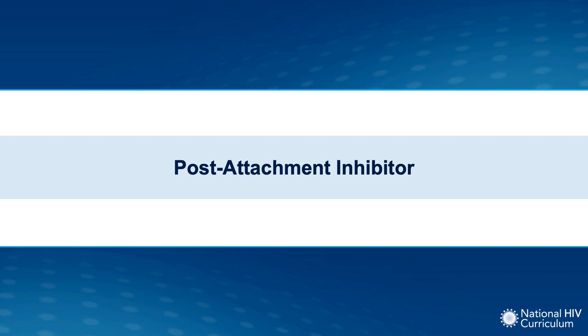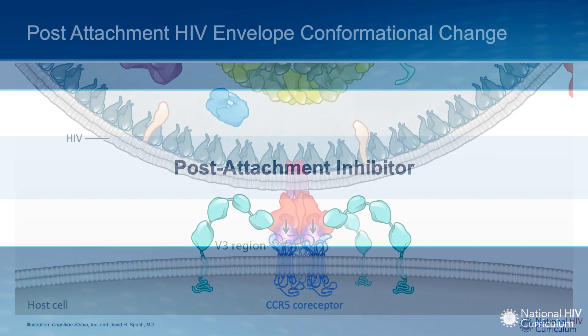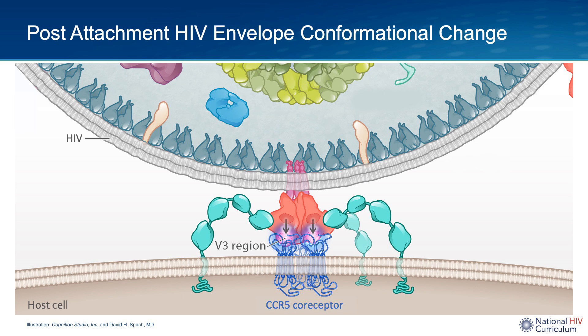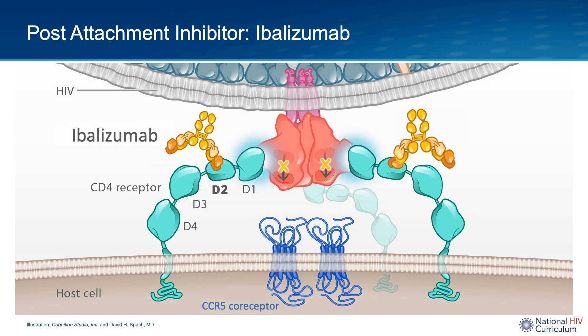Next, let's look at the post-attachment inhibitor subclass. Following HIV attachment, the HIV GP120 undergoes restructuring whereby the V3 region migrates distally towards the host cell membrane — a movement essential for HIV binding to the host cell co-receptors. The post-attachment inhibitor Ibalizumab is a humanized monoclonal antibody that binds to the host cell CD4 receptor at the domain 2 region. This binding does not block attachment, but it prevents the conformational change in GP120 needed for GP120 to bind to the host cell co-receptor, making this a post-attachment inhibitor.